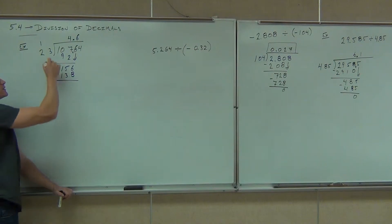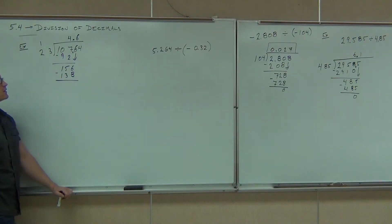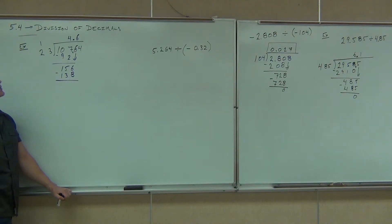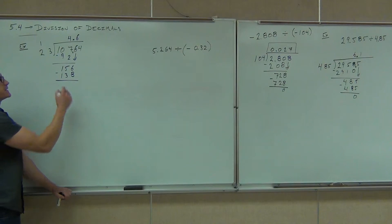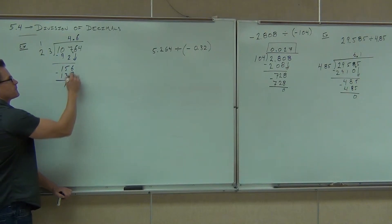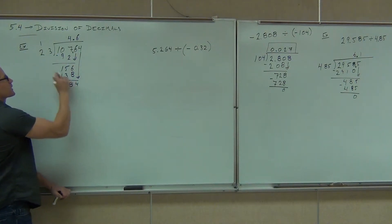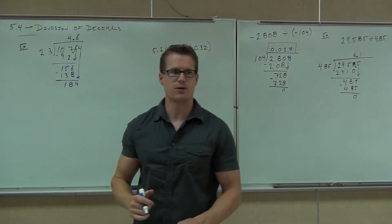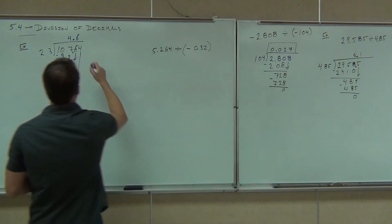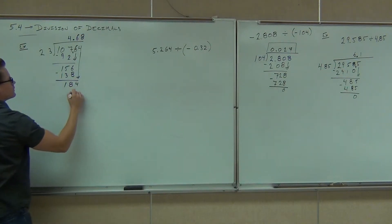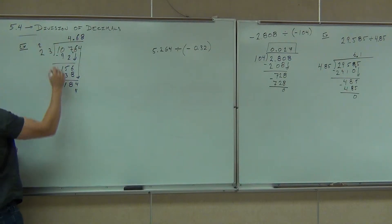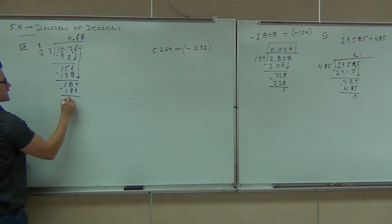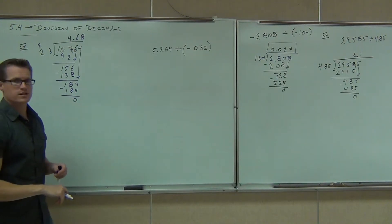How much is that when we subtract? It equals 18. Bring down the 4. How many times is 23 going to go into 184 without going over? Eight times. If we subtract, we get zero, so our answer is 4.68.